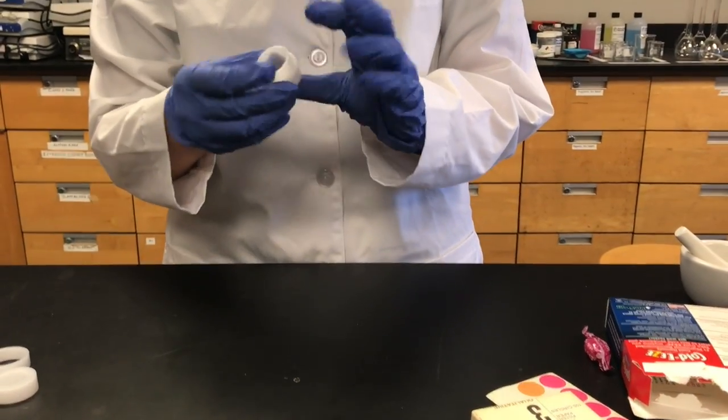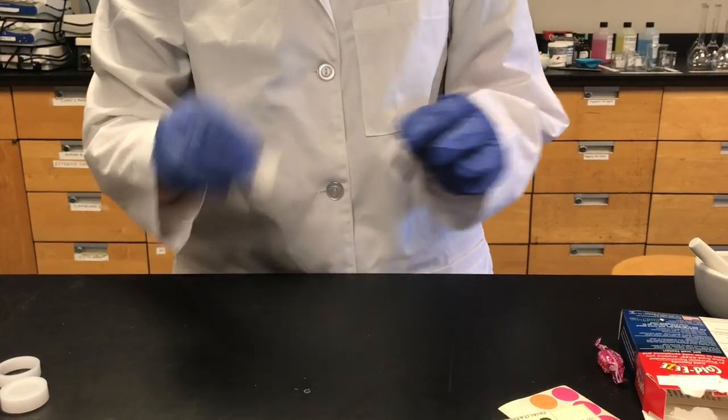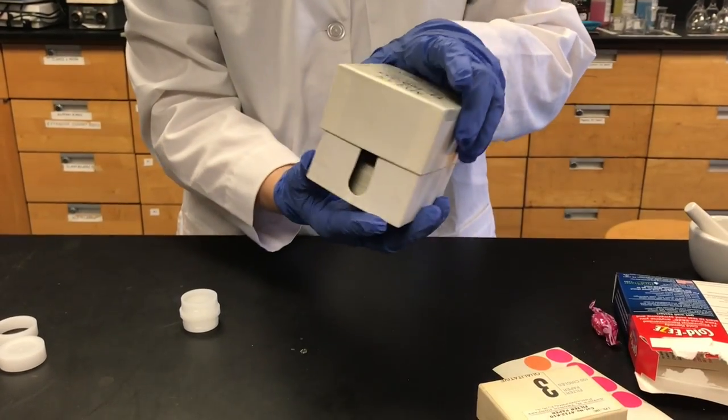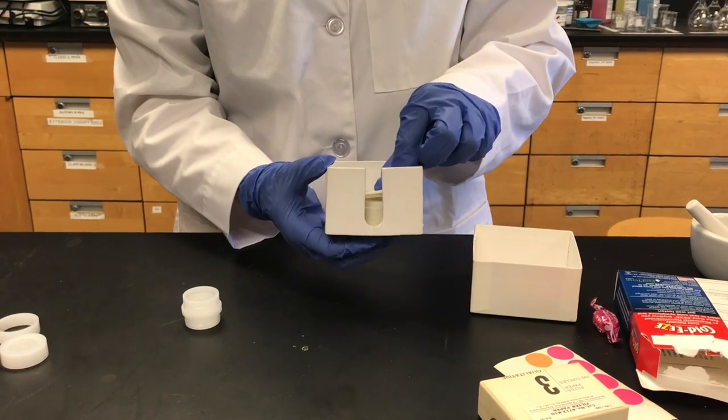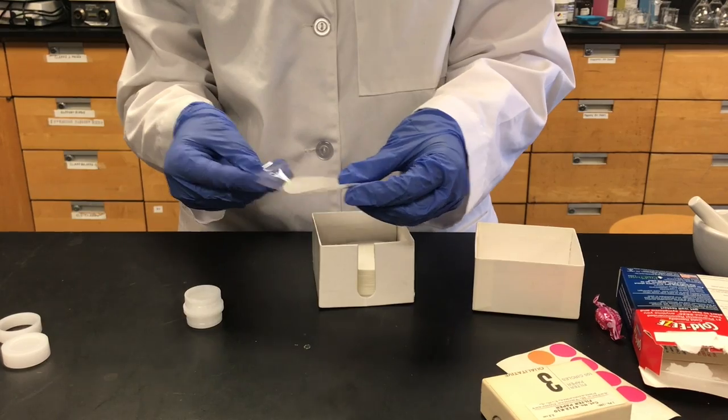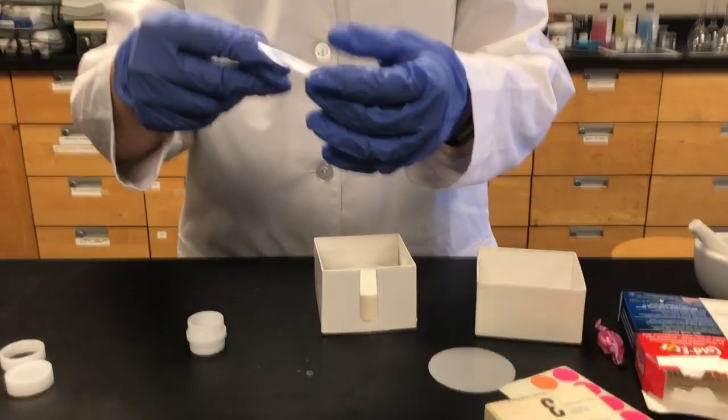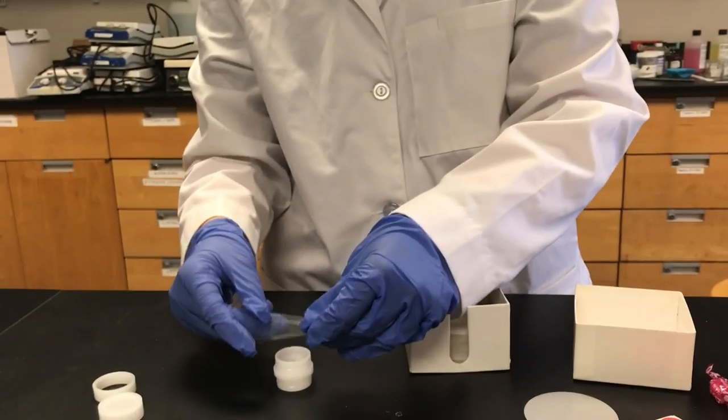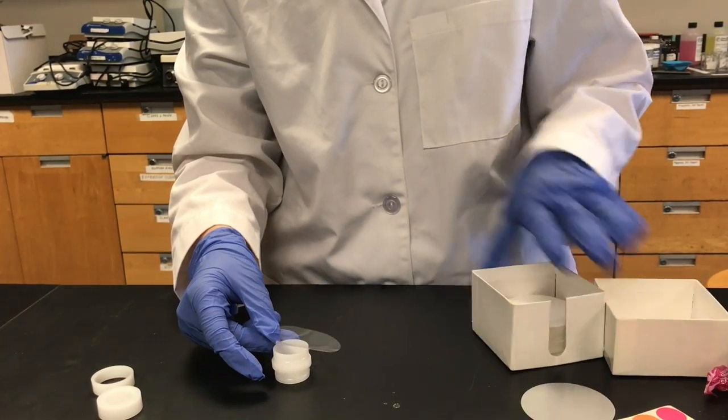You're going to take some of these mylar XRF films. You just need one and they'll peel right off of this sheet. So this is the clear sheet that you need. You're just going to gently place it on top of the body piece.